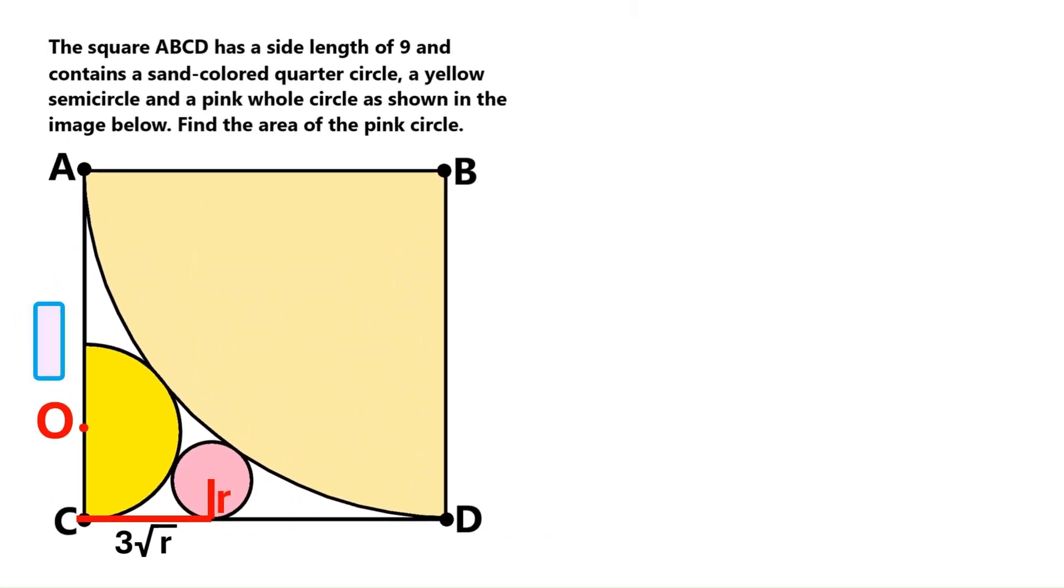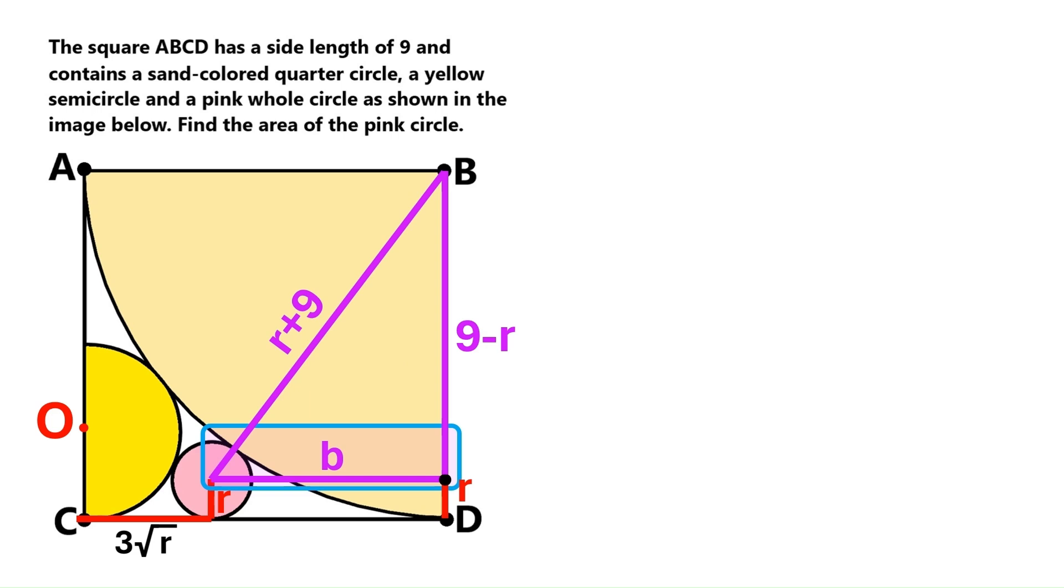We can now zoom out to see the big picture. There we are. This pink circle's radius is R. Let's put another R here. Next we draw a radius for the sand colored circle here. Let's draw another radius here coinciding with the side of this square. We know its side is 9. So this radius is also 9. And this radius is 9 too. Radii of tangent circles make a straight line. So this distance here is R plus 9. Let's take this R down here and project it onto this side. The distance above R becomes 9 minus R. Let's draw a line parallel to the lower side of the square. Let's call its length B. We get a right angle here.